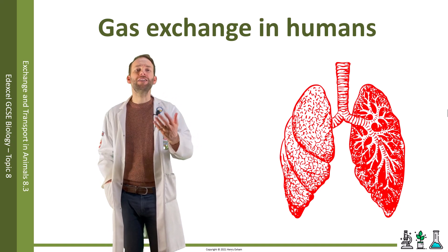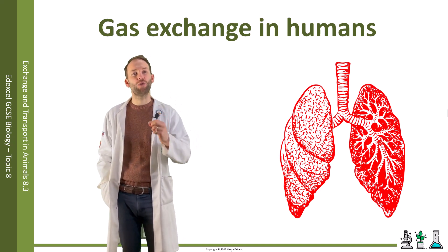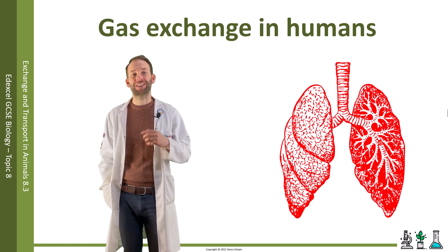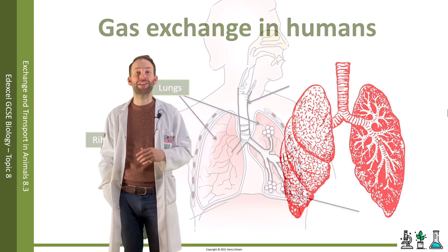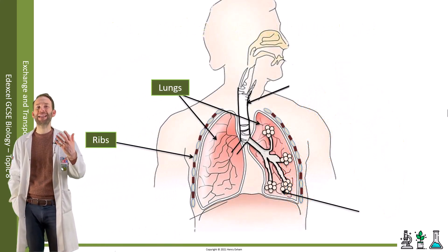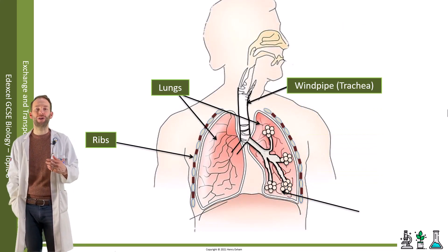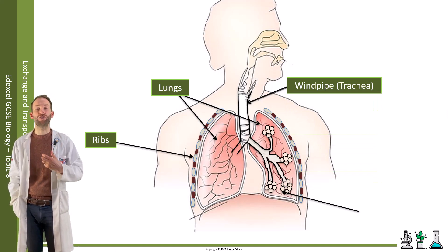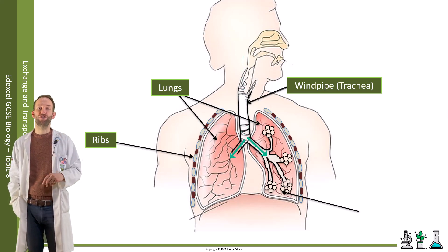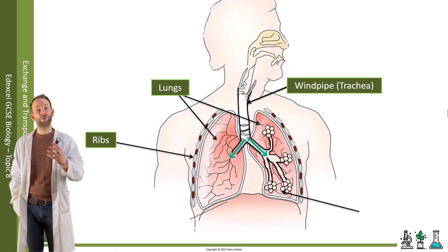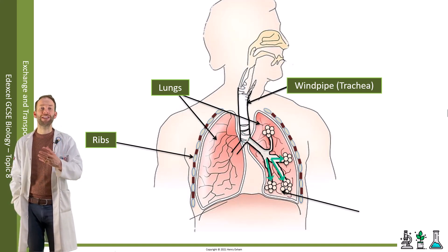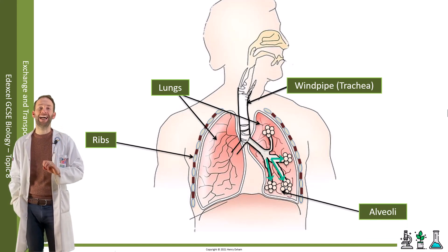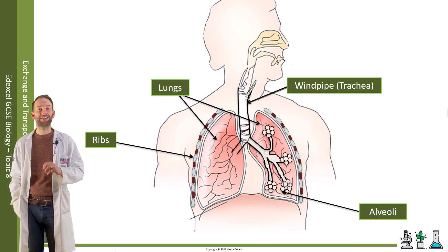The lungs are highly adapted organs that allow mammals to exchange gases between the environment and their blood. Here's the basic structures in the thorax. You've got the trachea, the windpipe, which leads into those two lungs. As you move down the trachea, it splits into two tubes called the bronchi. These split into smaller tubes called the bronchioles, and finally those end at the alveoli, which is where gas exchange happens in those little air sacs.